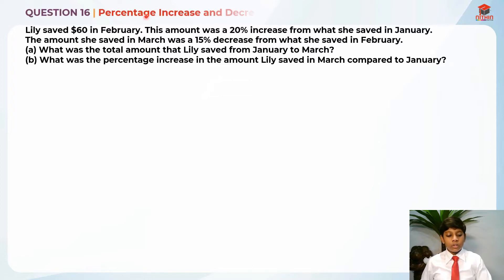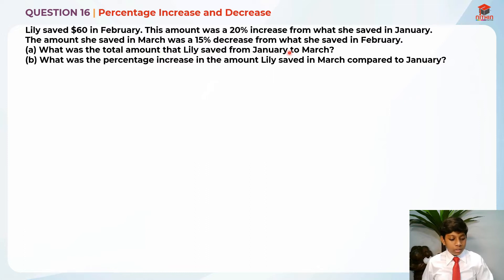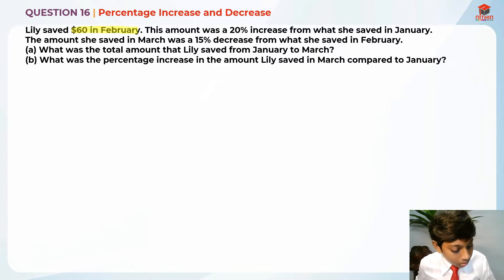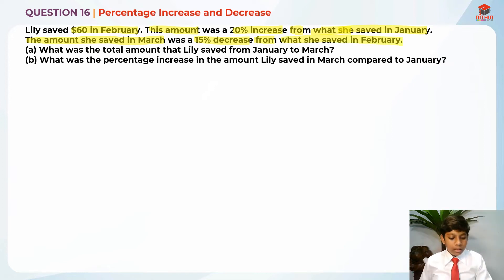Question 16 is testing us on percentage increase and decrease. Let's read the question first for Part A. Lily saved $60 in February. This amount was a 20% increase from what she saved in January. The amount she saved in March was a 15% decrease from what she saved in February. Part A: What was the total amount that Lily saved from January to March? Now let's highlight the key information.